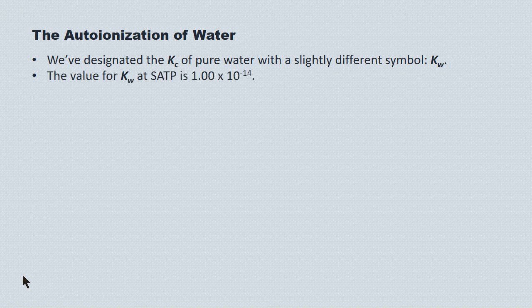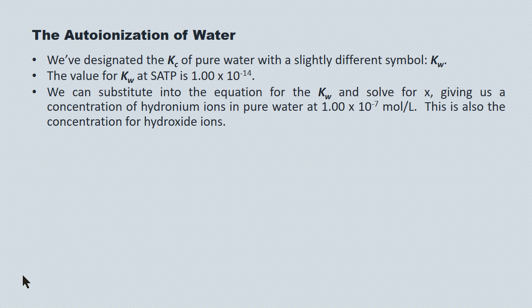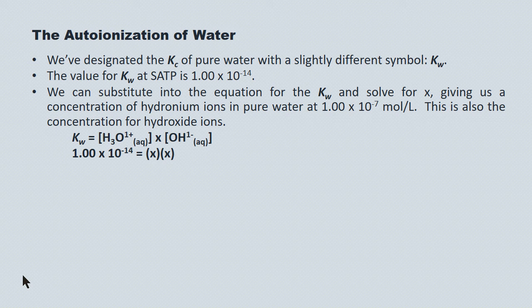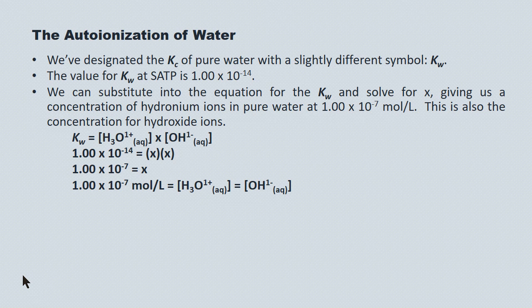The value for Kw at SATP is 1.00 times 10 to the minus 14. We can use this to determine the concentration of both hydronium and hydroxide ions in pure water at SATP. Kw equals hydronium ion concentration times hydroxide ion concentration. 1.00 times 10 to the minus 14 equals x squared. Therefore, hydronium ion concentration equals 1.00 times 10 to the minus 7 moles per liter, as does hydroxide ion concentration. So pure water has equal concentrations of acid and base.